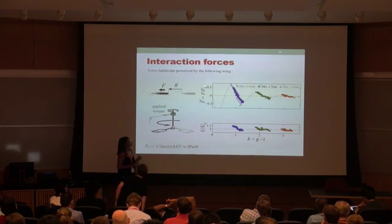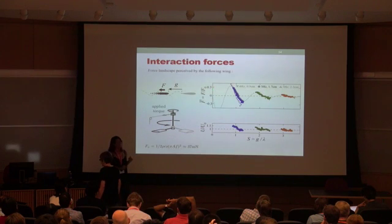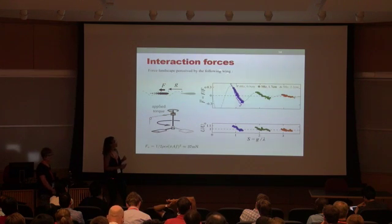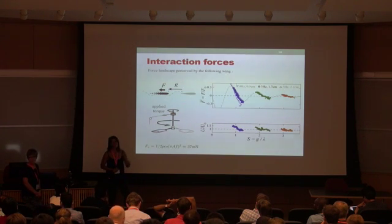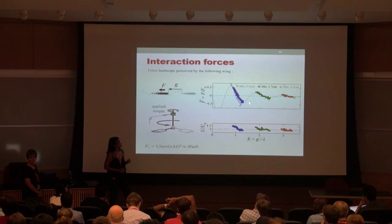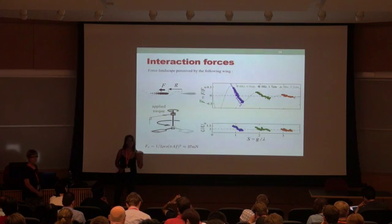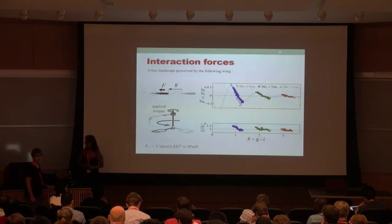So what you see also here is non-dimensionalizing by typical fluid load on the wing. And so it's pretty important, 30% of what you would expect on the wing. I did the same thing for the other stable position. And what you get is the same thing except that the magnitude of force decreases because the influence decreases with distance.